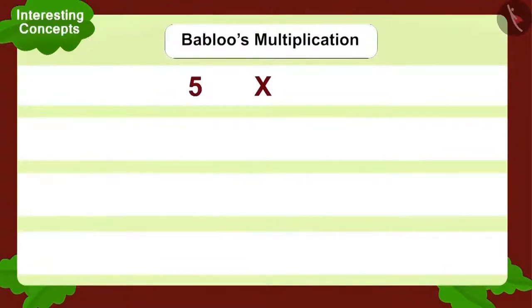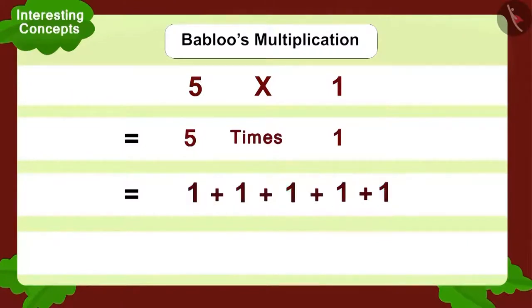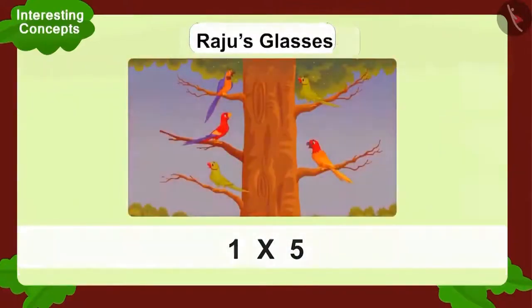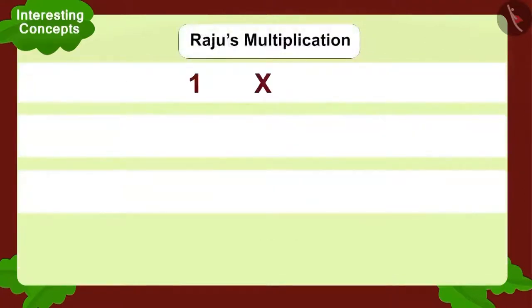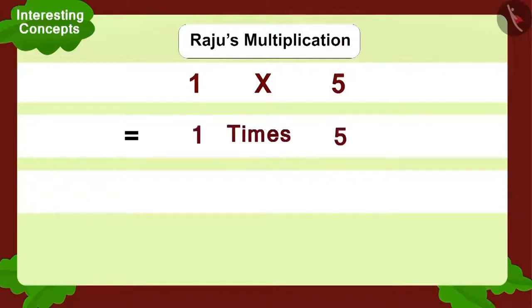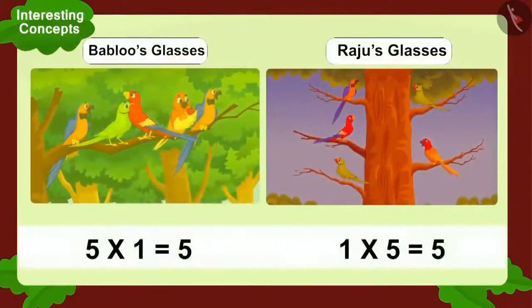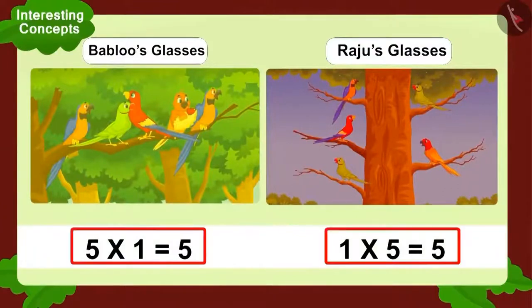Let's look at Bablu's multiplication first — five multiplied by one. How can we write this using addition? Yes, we can add one five times. So how many birds in total? Five. Now let's look at Raju's multiplication — one multiplied by five. Can we write it using addition? No. Why so? Because one multiplied by five is one time five, which gives you five. Raju saw as many birds as Bablu — both of them saw five birds.